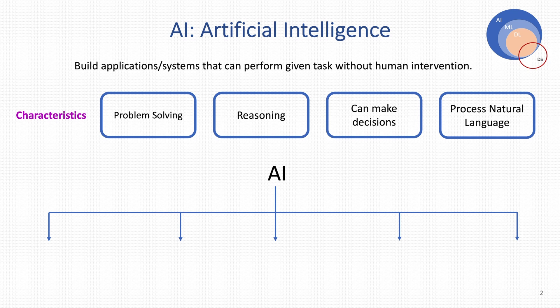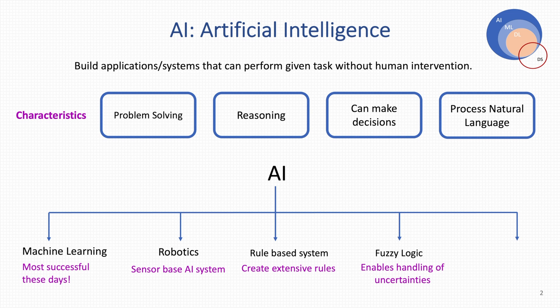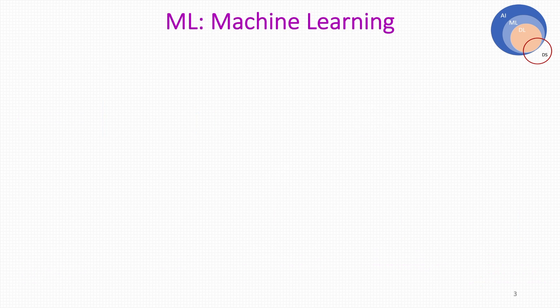Till now, various approaches have been used to implement AI. The most common one, which we know, is machine learning — which is very successful nowadays. Some other ways of implementing AI are robotics, expert systems, fuzzy logic based systems, and genetic algorithms.